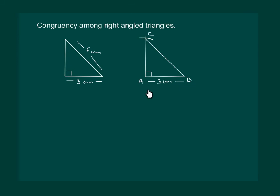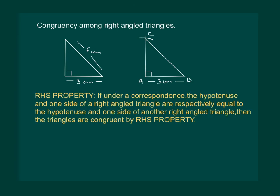Hence, for the right triangles, we have the RHS property for congruency of triangles. RHS property states: If under a correspondence, the hypotenuse and one side of a right angle triangle are respectively equal to the hypotenuse and one side of another right angle triangle, then the triangles are congruent by RHS property.